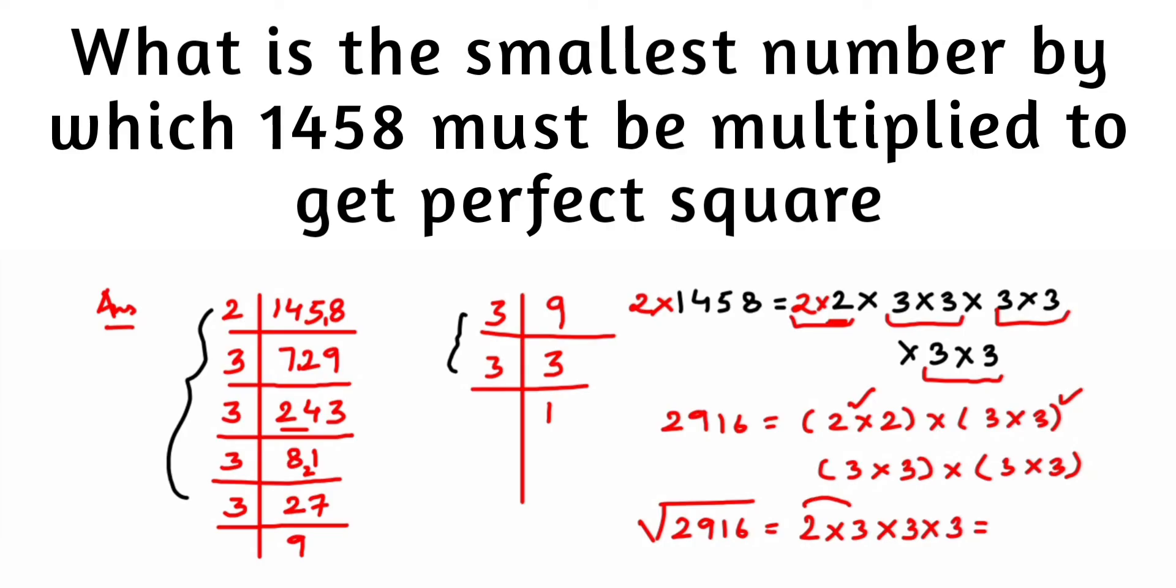Just multiply it. Here 2 threes are 6, then 6 threes are 18, 18 threes are 54. So we'll get here 54. The square root of 2916 is nothing but 54. If you have any questions or doubts, you can drop a comment below. Thank you.